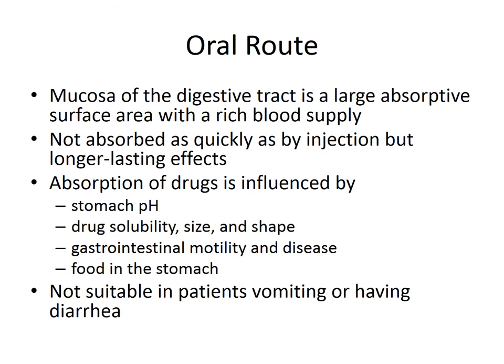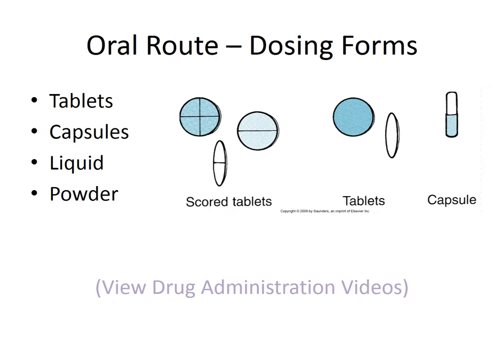If we have a patient who is vomiting or having diarrhea, we need to steer clear of the oral route because it's not going to have much effect if they can't keep it down. Looking at different dosing forms for oral medications: tablets are probably the most common form we dispense. There are scored tablets that can be broken into halves or quarters, non-scored tablets that are easy to break in two, capsules with granules, and of course liquids and powders as well.